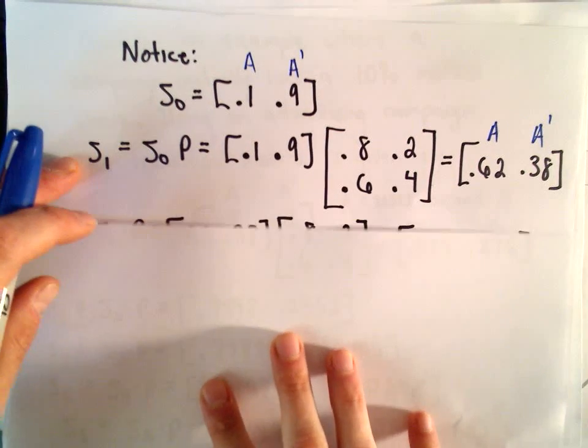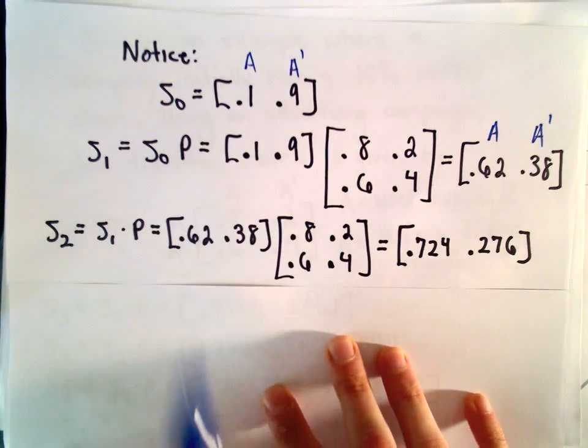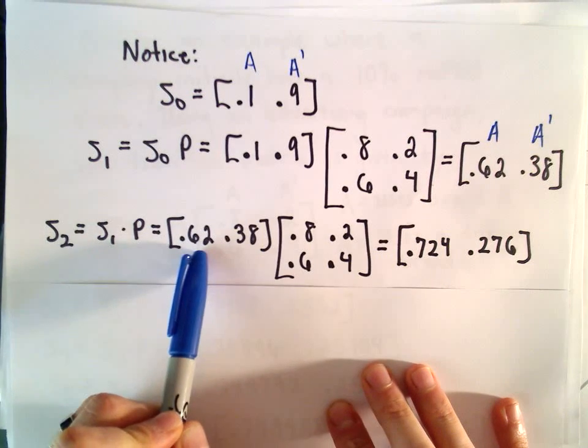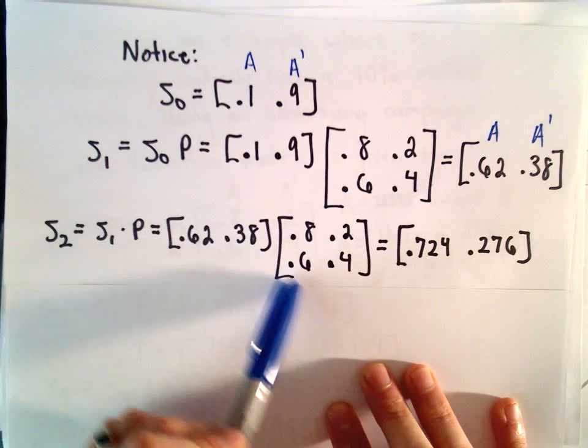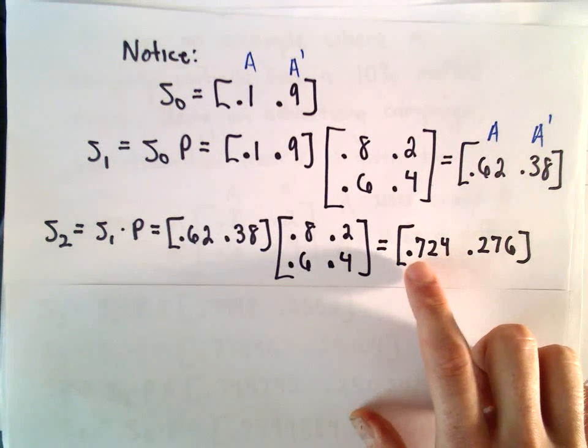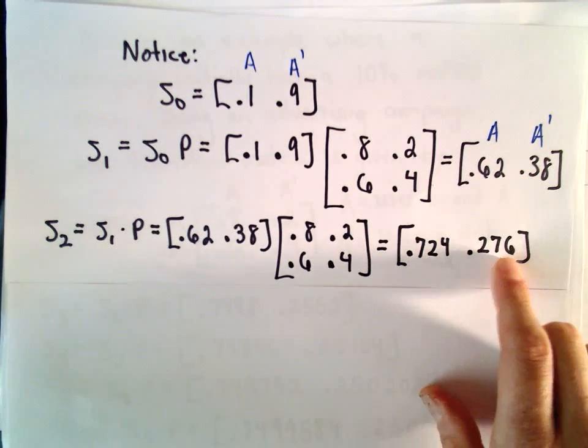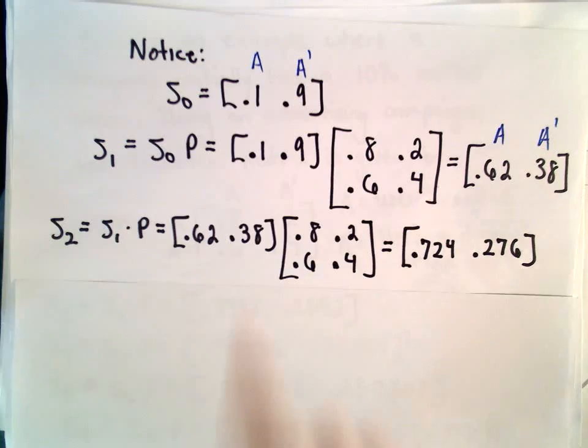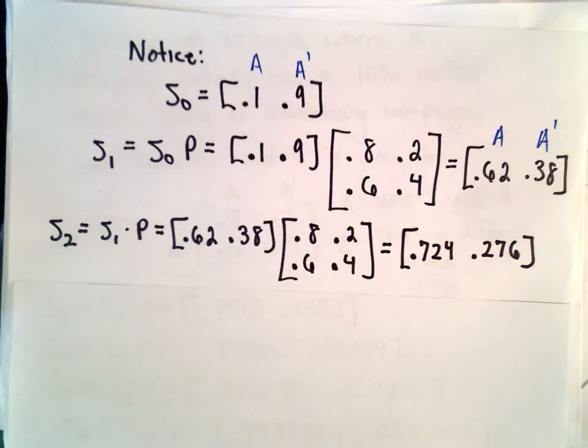We could keep this up. If we want to figure out what happens two months later, we now have to update our information because they have 62% of the market and 38% belongs to its competitors. Again, we would multiply by the transition matrix P. And now it turns out that brand A has 72.4% and its competitors have 27.6%. Its market share is clearly going up, but it certainly didn't jump as much. It jumped a lot after the first month, and it still jumped by a fair amount the second month, but certainly not as much.